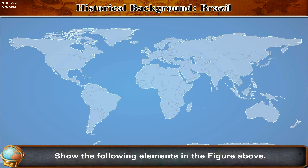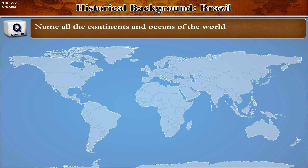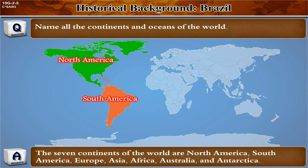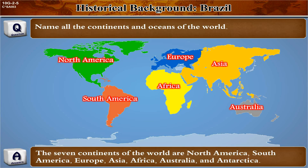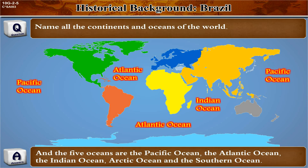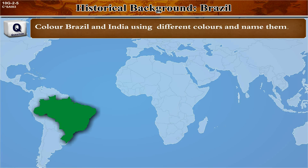Map activity: show the following elements in the figure — name all the continents and oceans of the world. The seven continents are North America, South America, Europe, Asia, Africa, Australia, and Antarctica. The five oceans are the Pacific Ocean, the Atlantic Ocean, the Indian Ocean, the Arctic Ocean, and the Southern Ocean. Color Brazil and India using different colors and name them.